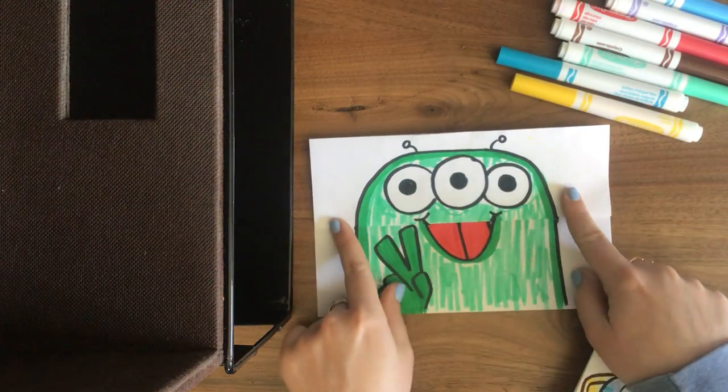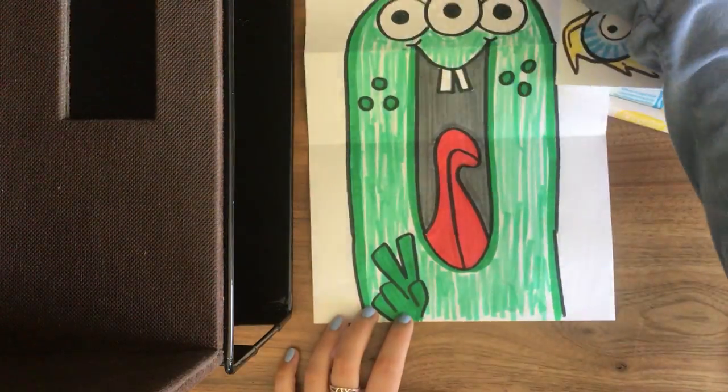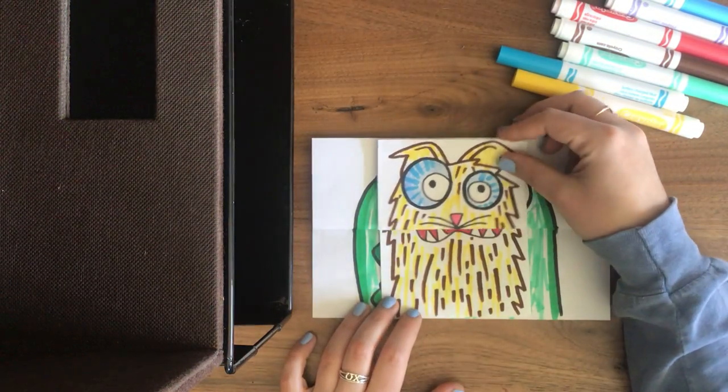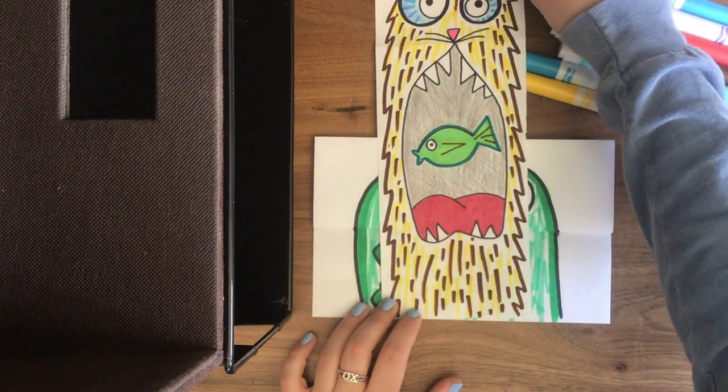As you can see here, I created an alien and it pops up and I created something inside the mouth as well as this animal here and he's eating a fish.